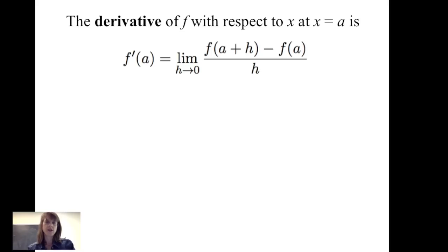The instantaneous rate of change is also the derivative of f with respect to x at x equals a. We write that as: the derivative of f evaluated at a equals the limit of f(a+h) minus f(a) divided by h, as h goes to 0. The notation on the left can be read as the derivative of f with respect to x evaluated at a, or f prime of a.